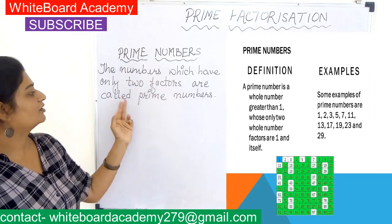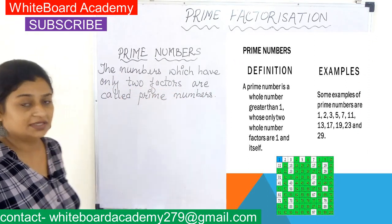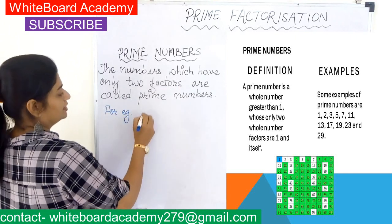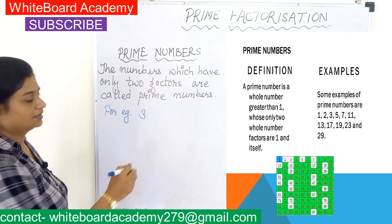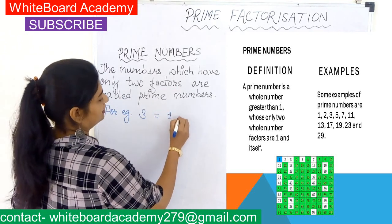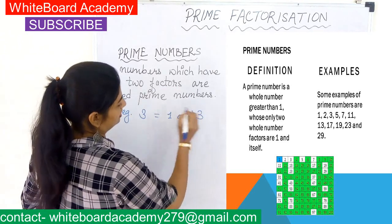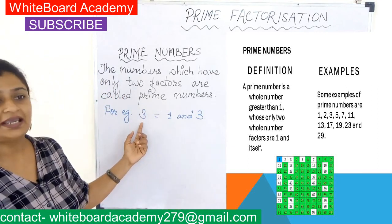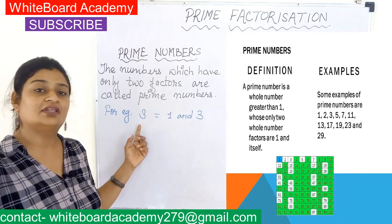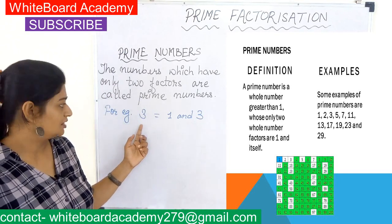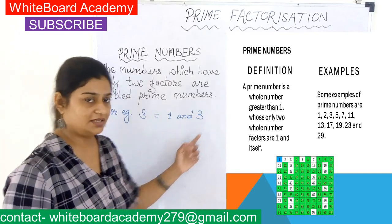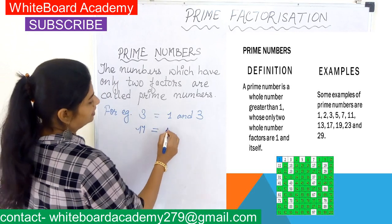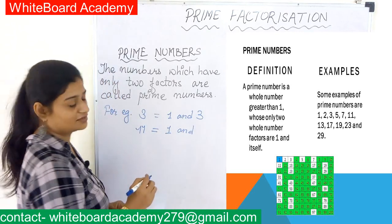Let's begin with prime numbers. The numbers which have only two factors are called prime numbers. For example, the number 3 — the factors of 3 are 1 and 3. Factor means these are the only two numbers which can divide 3 exactly, meaning without leaving a remainder. So it has only two factors: 1 and 3.